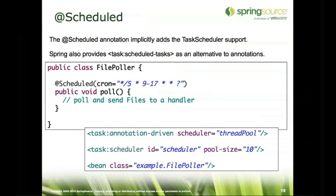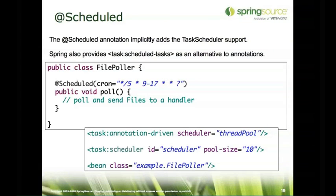We also have the @Scheduled annotation, just like @Async. The container automatically recognizes anything with the @Scheduled annotation as long as you enable the task annotation-driven element. When it encounters a @Scheduled annotation on a method, it registers that method with a scheduler to be invoked based on the provided schedule — file poller is just a bean definition with no extra configuration needed. If you don't want to use annotations or are using third-party code you can't annotate, the task namespace provides a scheduled-tasks element where you can explicitly list beans by reference and method, specifying the scheduler configuration in the XML.